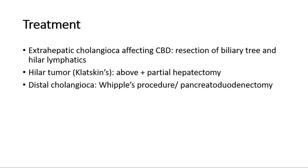The curative treatment is complete surgical resection of the tumor with histologically negative margins — that is the only cure. However, only 25% of tumors are resectable. For extrahepatic cholangiocarcinoma affecting the common bile duct, the treatment is resection of the biliary tree and hilar lymphatics. If it is a hilar tumor, or Klatskin tumor, the treatment includes resection of the biliary tree, hilar lymphatics, plus partial hepatectomy. For distal cholangiocarcinoma, the procedure is Whipple's procedure, which is pancreaticoduodenectomy.